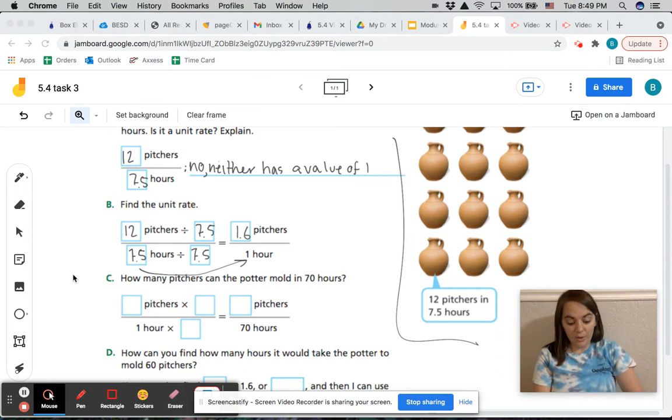Okay, so knowing the unit rate, the unit rate helps us be able to do all sorts of problems. We can figure out pretty much anything we want using this unit rate. So how many pitchers, and part C says how many pitchers can the potter mold in 70 hours? So what we're going to do is we know the unit rate, which is 1.6 pitchers per one hour. And all we do is we're going to use an equivalent fraction to figure out 70 hours. So we have this 1. This 1 has to get to 70.